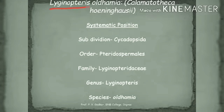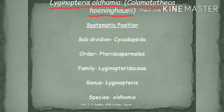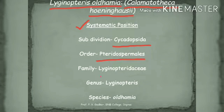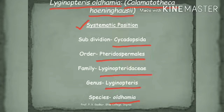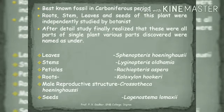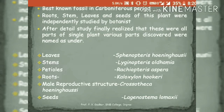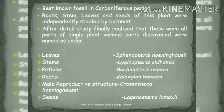Lyginopteris oldhamia is a fossil gymnosperm belonging to the family Lyginopteridaceae. Its reconstructed form is also called Kalymmatotheca hoeninghausi. Its systematic position: subdivision Cycadopsida, order Pteridospermales, family Lyginopteridaceae, genus Lyginopteris, species oldhamia. It is one of the best fossils of the Carboniferous period.